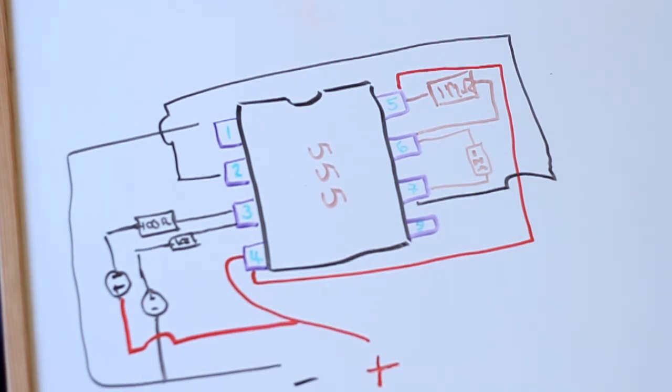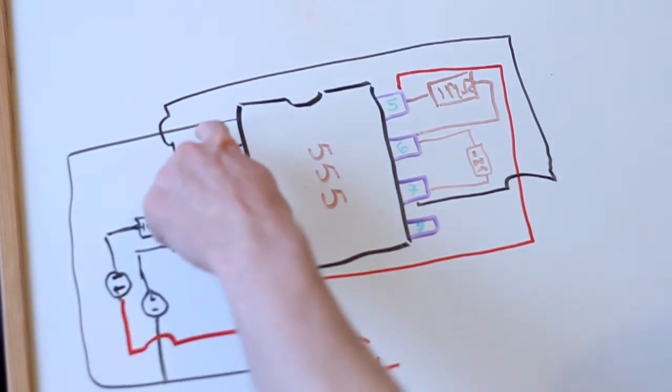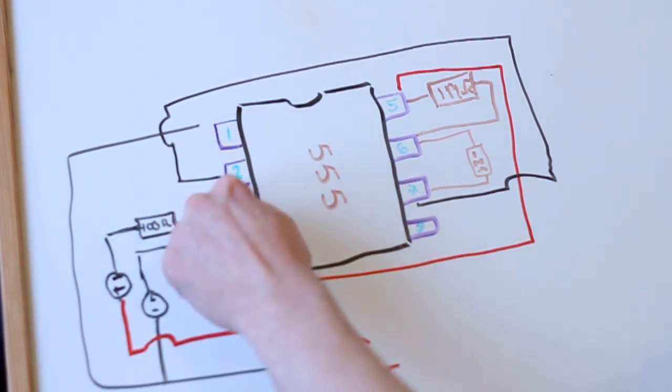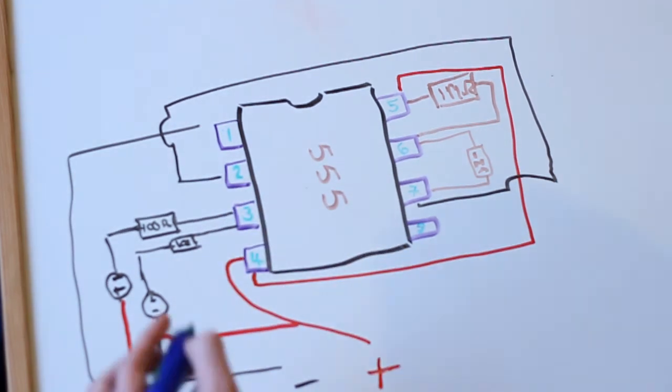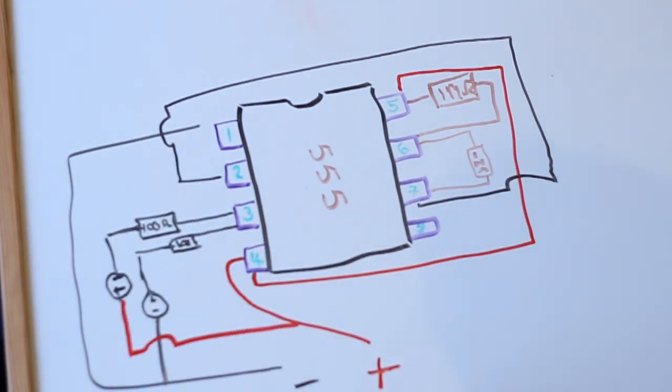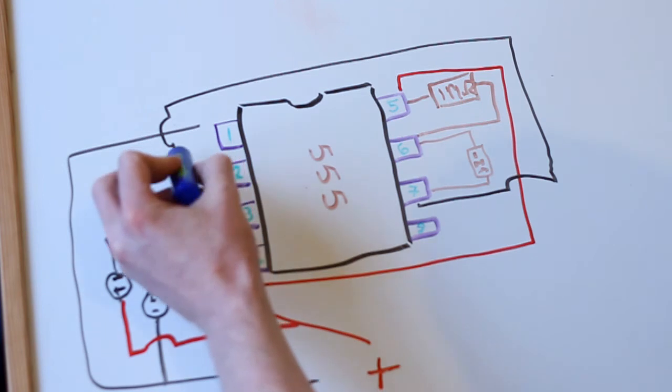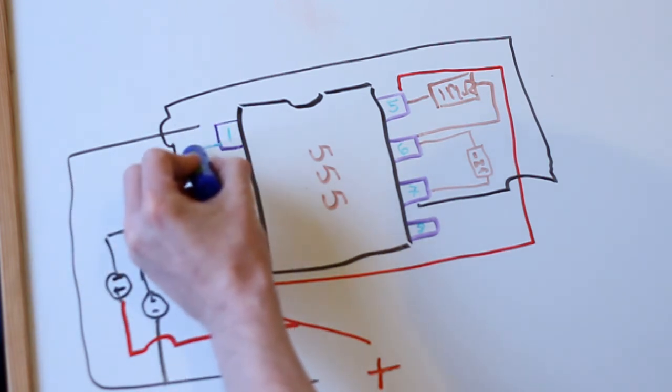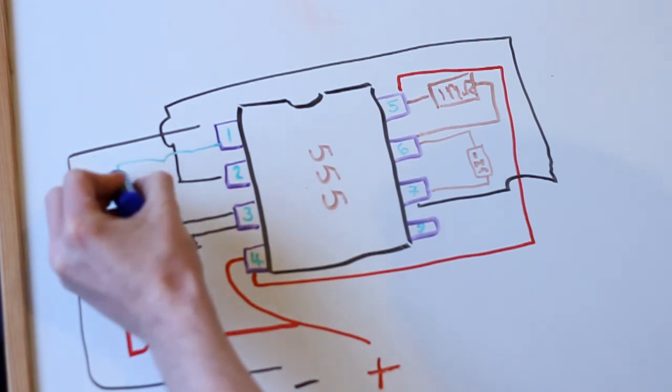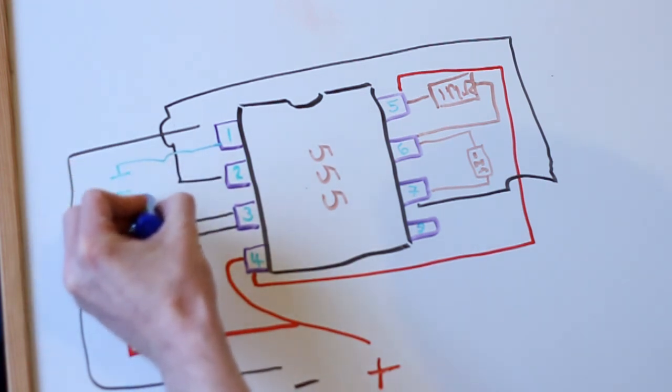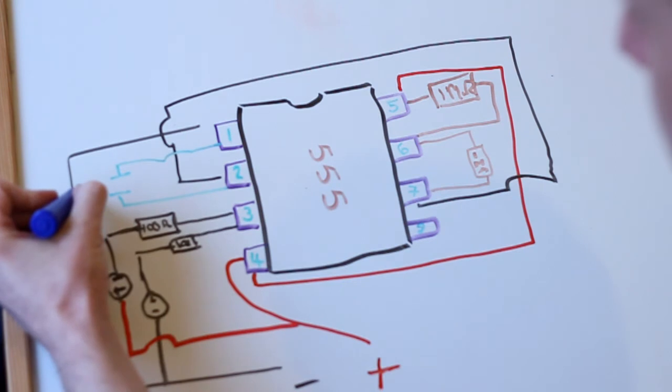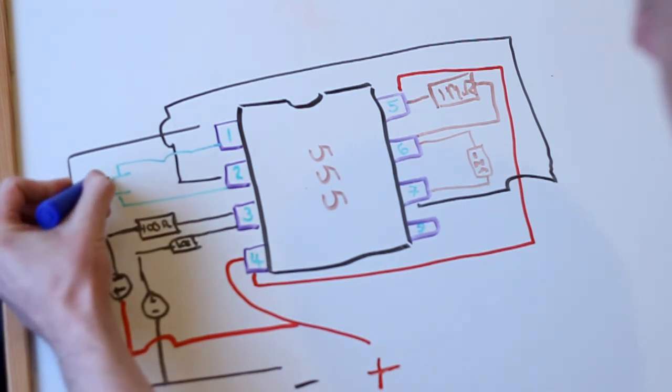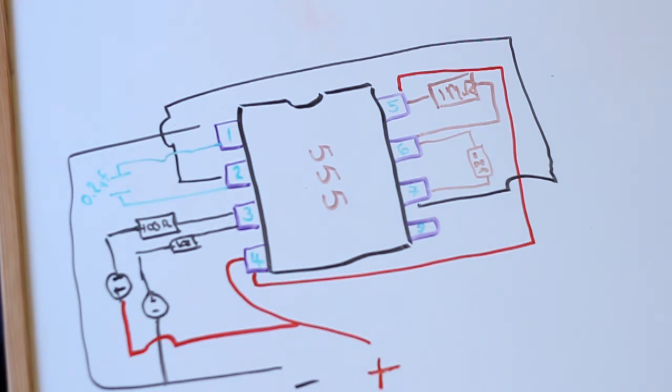Now, the very last bit we need to do to get this whole circuit to work, is we need to put the capacitor between pin 1 and pin 2. I'm using a 0.2 microfarad capacitor along here. So, if I just draw that in. So, that's 0.2 microfarads. And that's it, that's all you need to do.